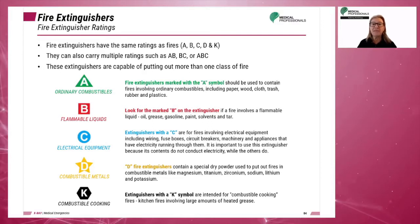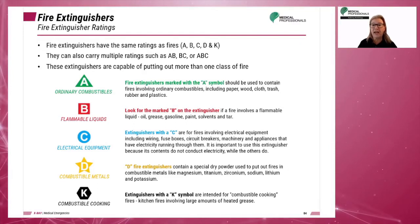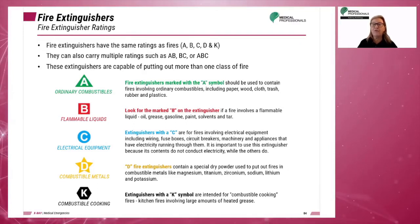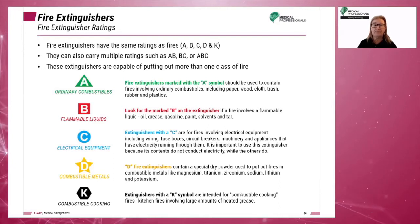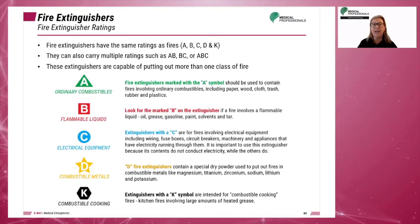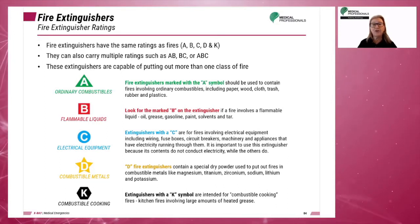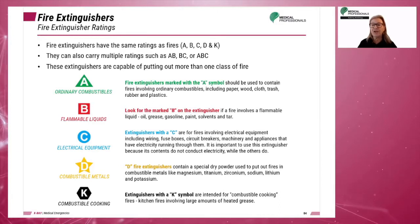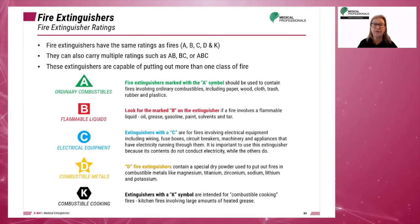The Type C extinguisher also has carbon dioxide and dry chemicals for use on electrical equipment. The Type K extinguisher has carbon dioxide for use on cooking oils and grease, and generally for use on fires in kitchen areas.